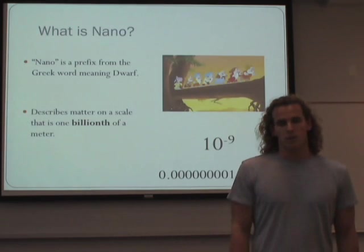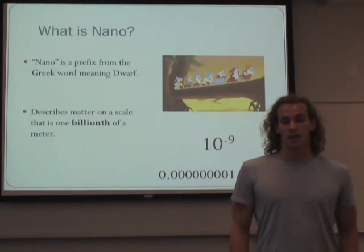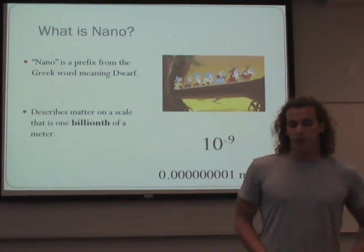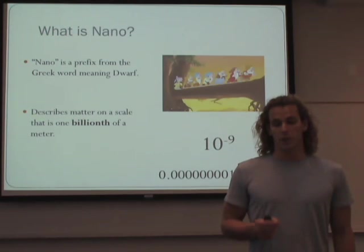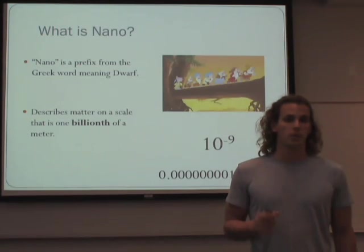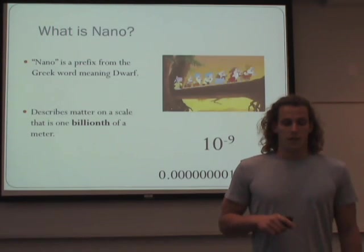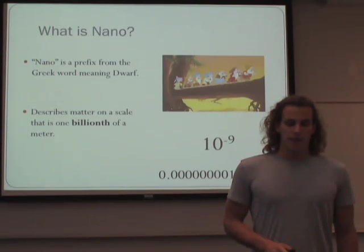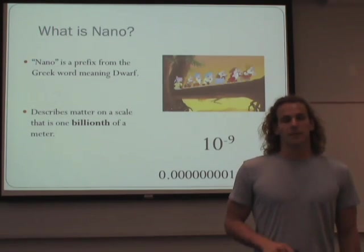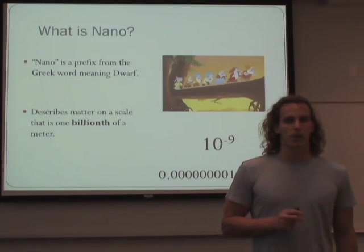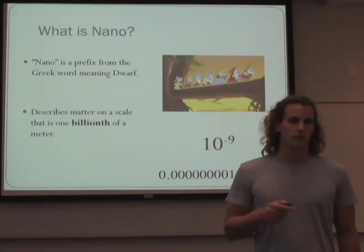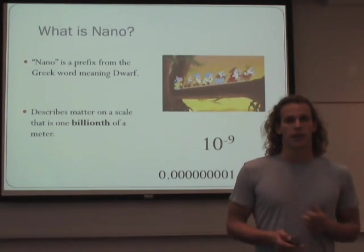So what exactly is nano? Nano is a prefix from the Greek word meaning dwarf. It describes matter on a scale that is one billionth of a meter. That's an extremely small amount, so let's try to rationalize what that really means.